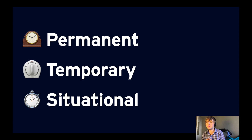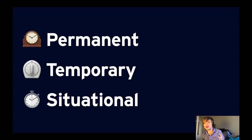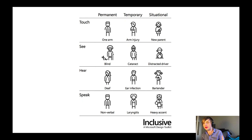But it's even more important than just helping folks with permanent disabilities, because the ability or lack of an ability isn't always permanent — sometimes it's temporary or situational. Here are some examples from Microsoft's Inclusive Design Toolkit. A blind person has a permanent disability. Someone with a cataract may be temporarily disabled in a similar way. And a distracted driver might not be able to see the road — that would be an example of a situational impairment.